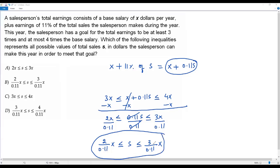So this is an inequality which represents the total sales S in dollars. We find this inequality in option B. So the correct answer for this question is option B.